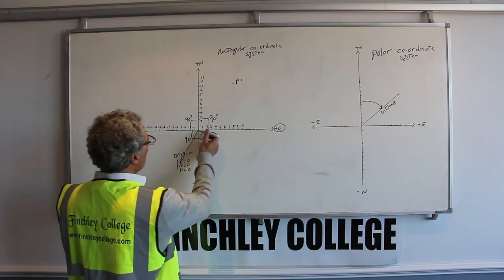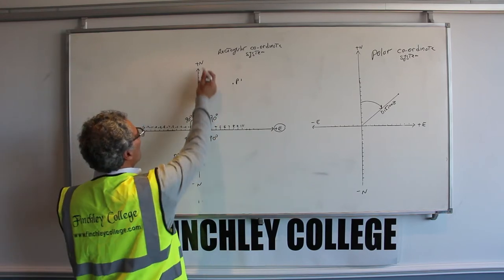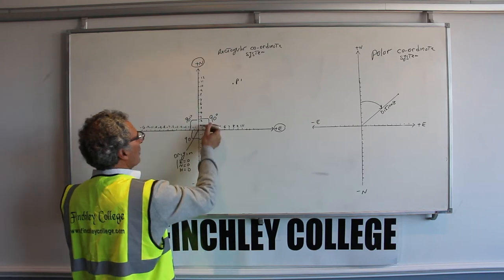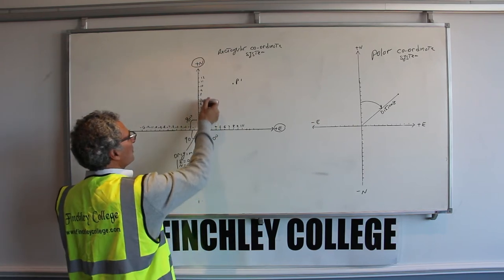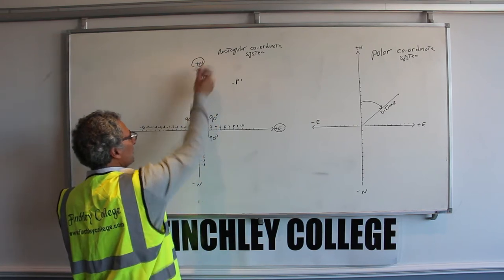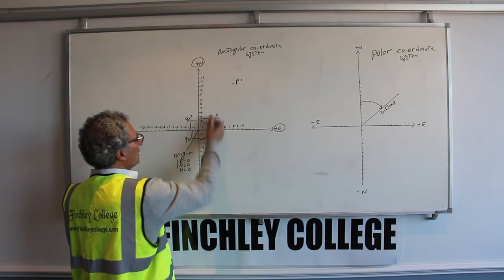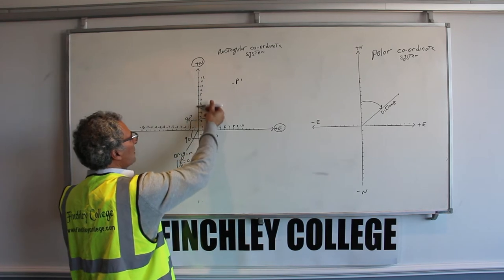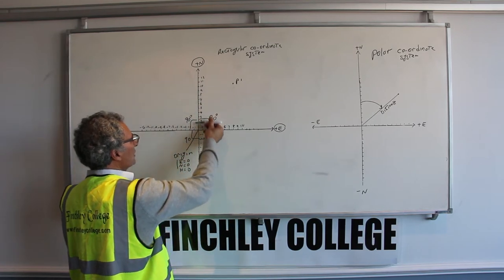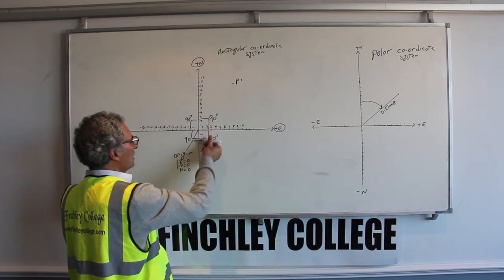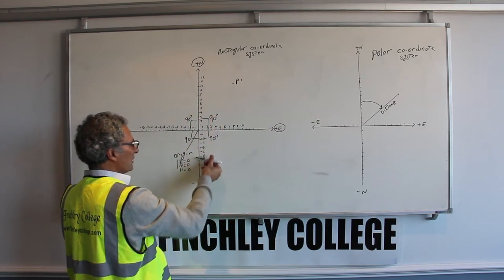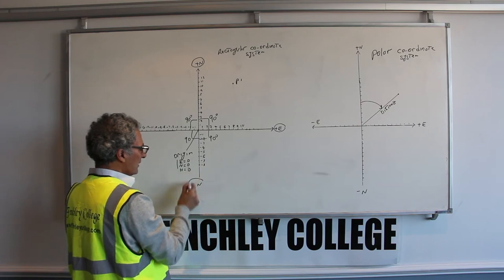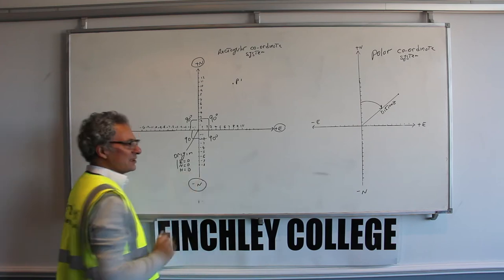If you move forward, your northing increases — you get plus north: 1, 2, 3, 4, 5, 7, all the way to infinity. And if you move backwards, your northing reduces until it gets back to zero again and then you go into negative territory all the way to minus infinity.